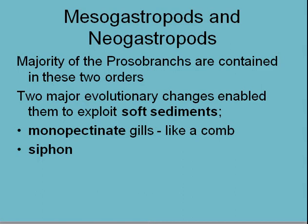What they've done that's a little bit different is they've changed from a bipectinate gill — the feather structure we looked at before — and now they have a monopectinate gill, which is like a one-sided feather. All the little striations that come off of the feather are only on one side, like a comb. They also have developed a siphon, so let's have a look at these two structures and why they're important.